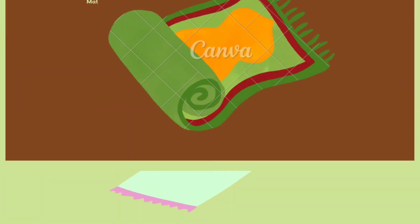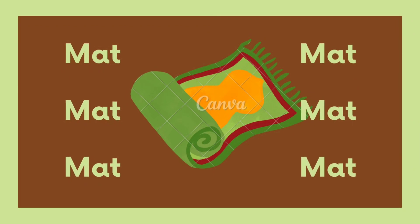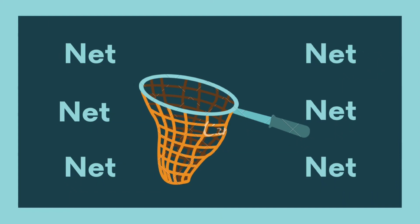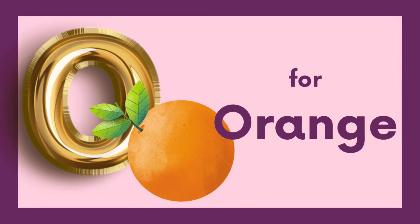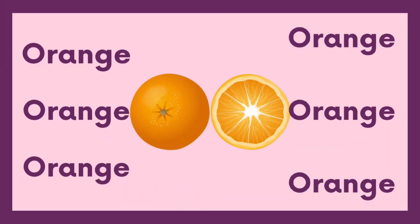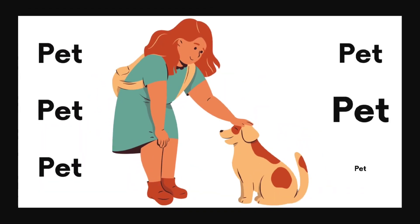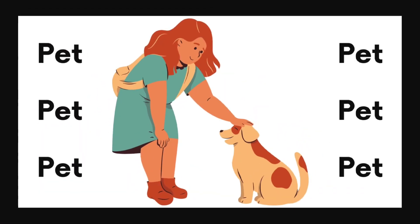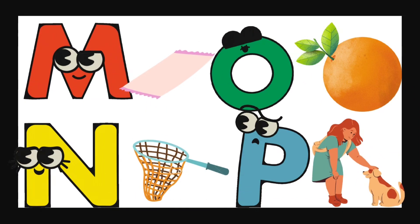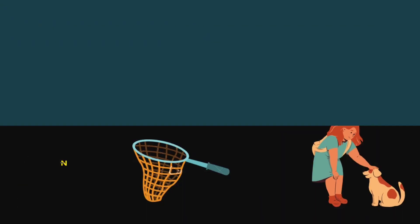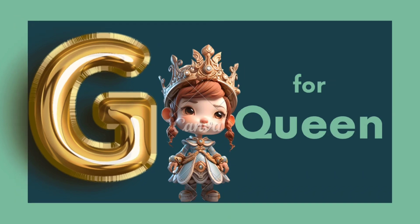M is for Mat, M-M-Mat. N is for Net, N-N-Net. O is for Orange, O-O-Orange. P is for Pet, P-P-Pet.